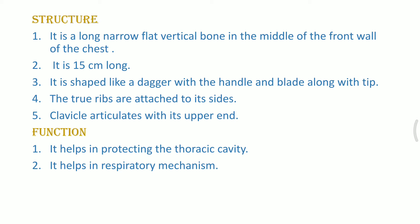The sternum is 15 centimeters long — this is important. The entire bone consists of three parts: the first part is a long, narrow, flat, vertical bone like a dagger handle; the next part is the body, which is like a blade; and the lowest tip part at the frontal end is known as the xiphoid process. It is important to know that it is made up of three parts and is around 15 centimeters long.